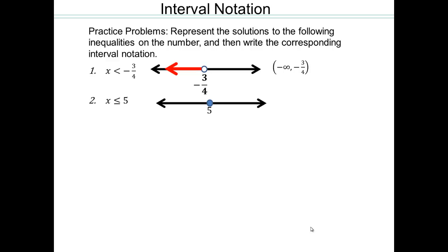For x less than or equal to 5: 5 is included and everything under it. Same picture as before, except this time you use a square bracket at 5. So the interval notation is negative infinity to 5 with a square bracket at 5 — square bracket because you're including 5. Round bracket is used when you are not including that number.